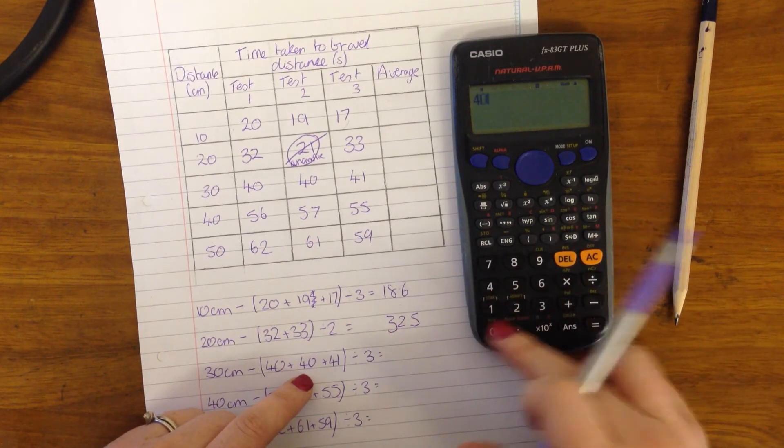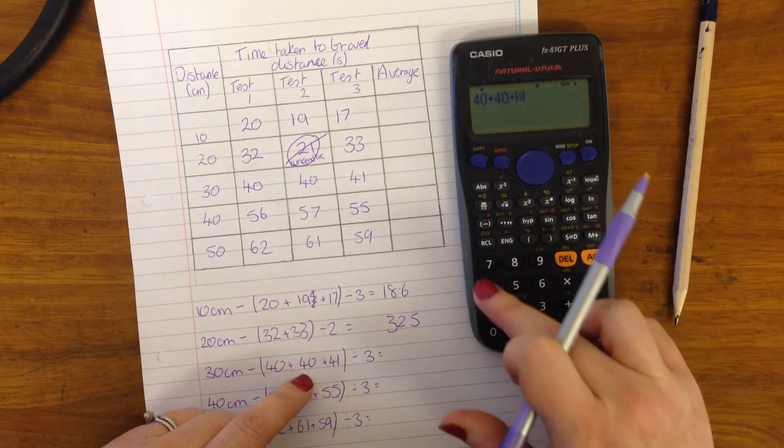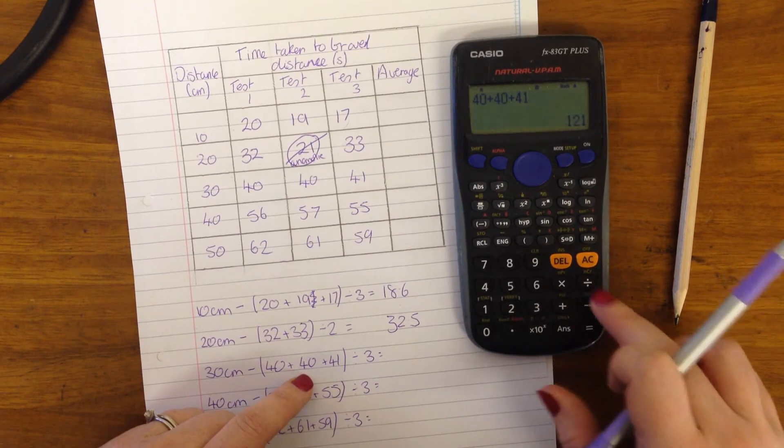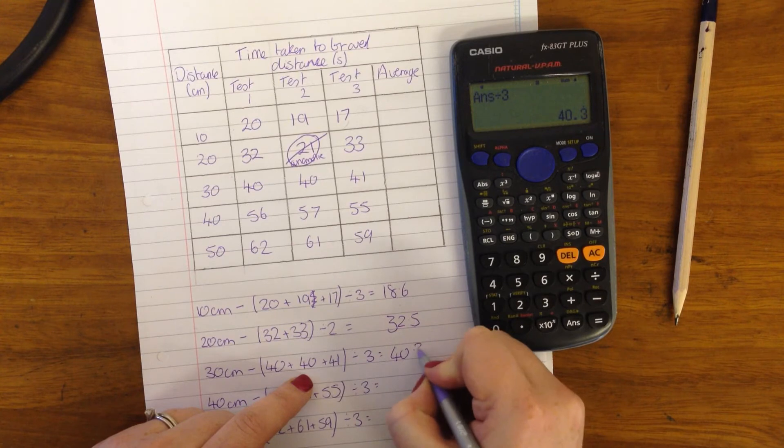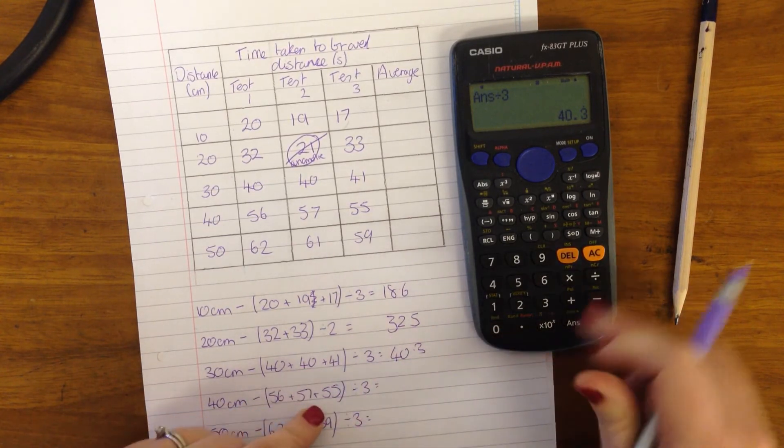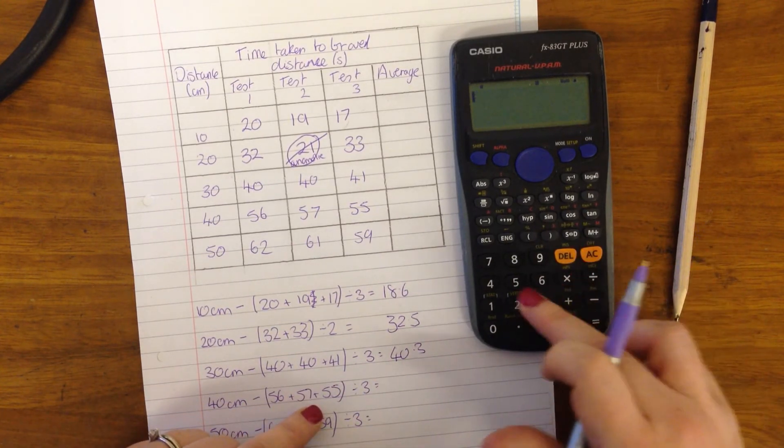Clear the calculator, 40 plus 40 plus 41. Remember, always hit equals, divided by 3, 40.3. You can see that's close to the numbers, so I'm happy with that number.